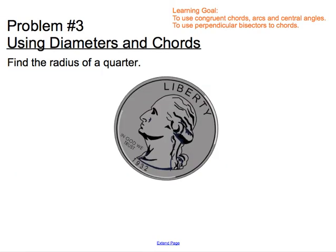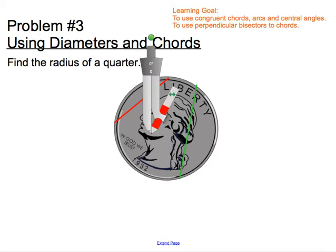Let's see if we can use this in an interesting way — we want to find the radius of a quarter. To find the radius, we have to find the center of the circle. We start by creating two chords: one chord drawn across the circle, and a second chord somewhere else. The perpendicular bisector of each of those segments must contain the center of the circle.